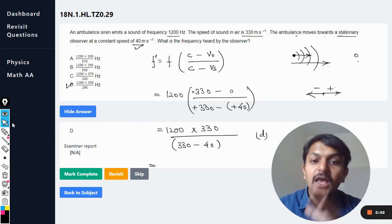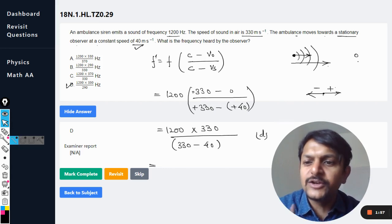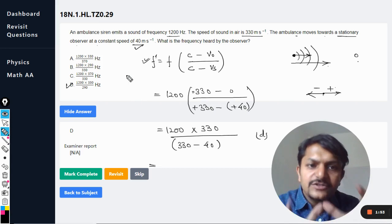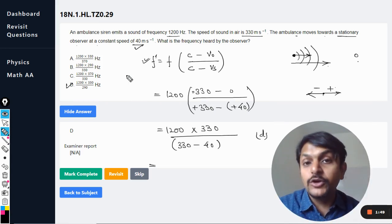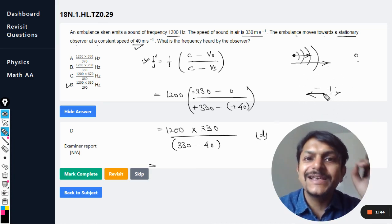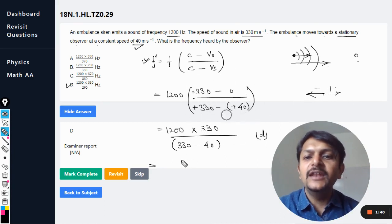So this is how we do this. Dear students, try to understand: in Doppler's effect there is only one single formula that you need to remember, and that is this. Whenever we are going to plug in the values, we are going to use the sign convention. Use the sign convention, take all of the velocities with the sign convention, plug in the values here, and you will be getting your answer without any problem.